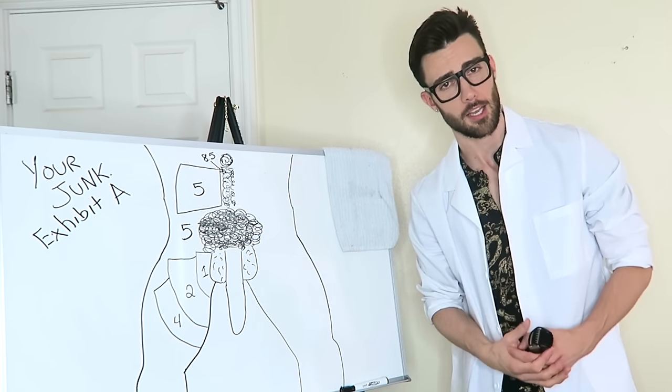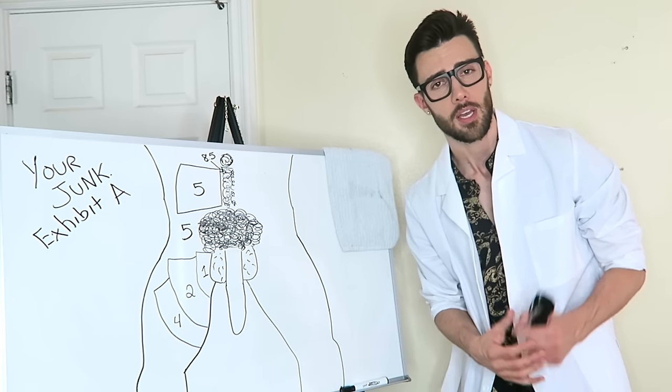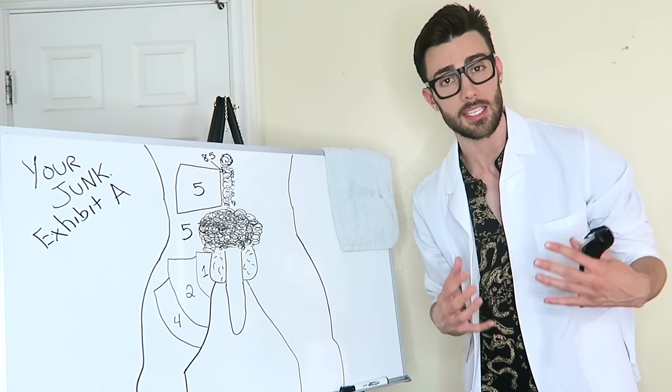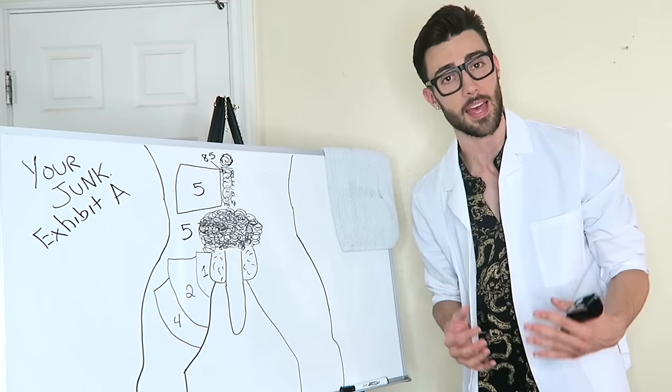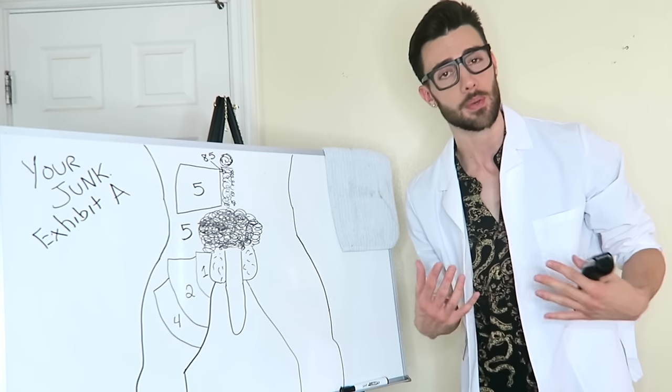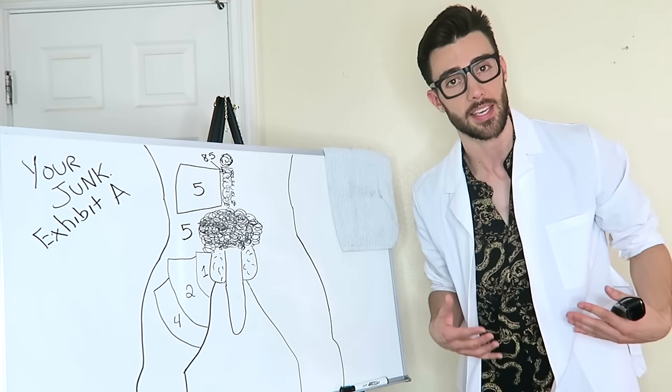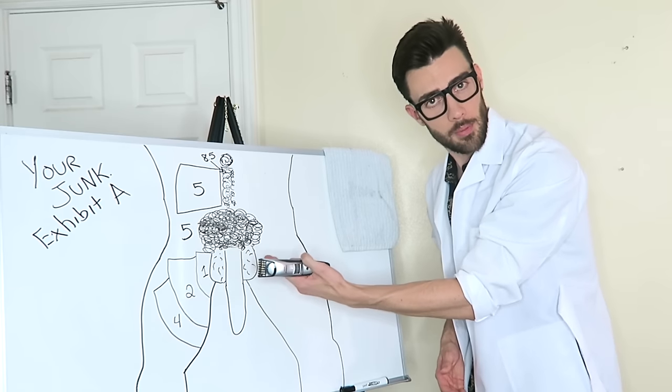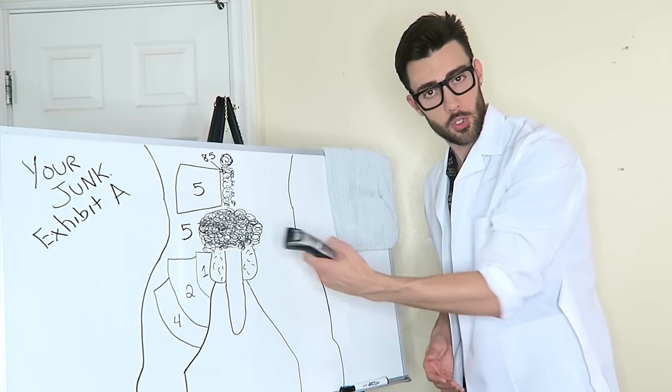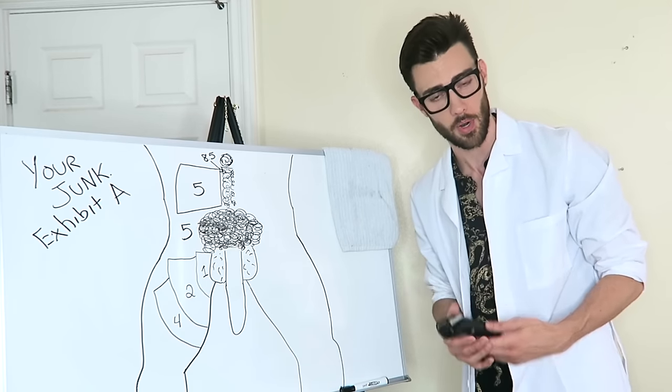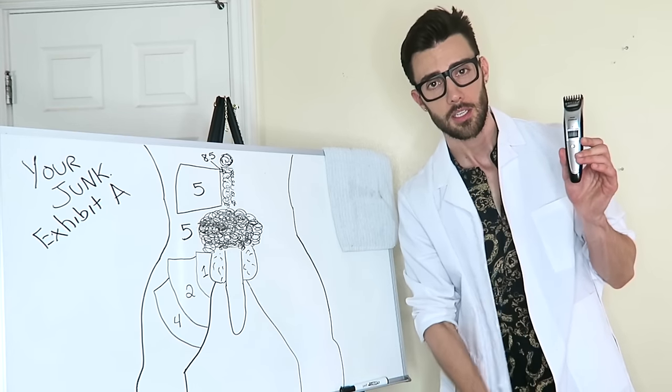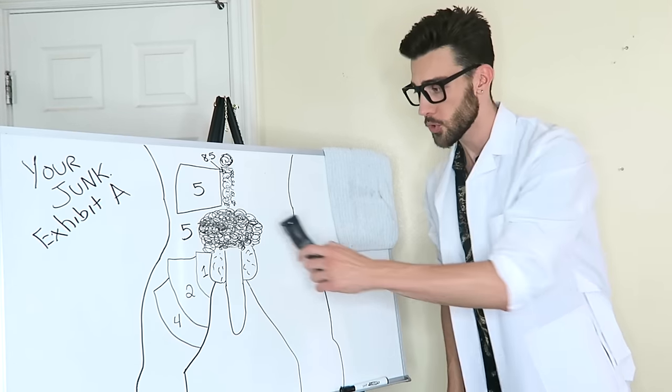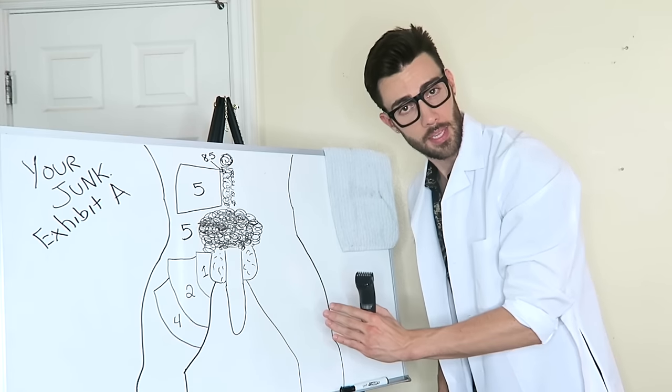So for the pubic bush area for myself I personally go with the number five. The number five keeps it long enough that I still feel like a man but it keeps it short enough that my partner is happy and also just keeps it more hygienic and also makes it look clean and like you meant to do it. Although this is probably the most important and obvious part of the trimming process it's also one of the easiest parts. So set your trimmer out of five. Turn that bad boy on and then trim that entire area until it's all the same length.